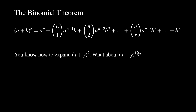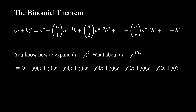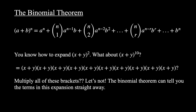How do we expand an expression like this? If we continue to solve this the way we would do brackets like (x + y)², we would have to write out all of these brackets 10 times and then multiply all of them together. The binomial theorem can tell you the terms in this expansion straight away, so rather than multiplying all those brackets you can know immediately that there are 11 terms in this expansion.